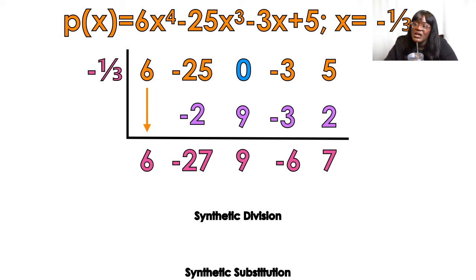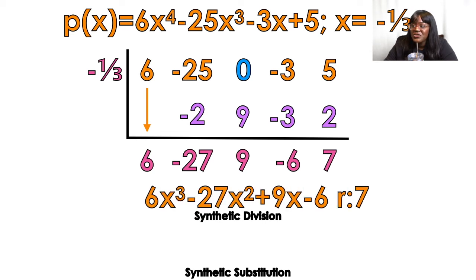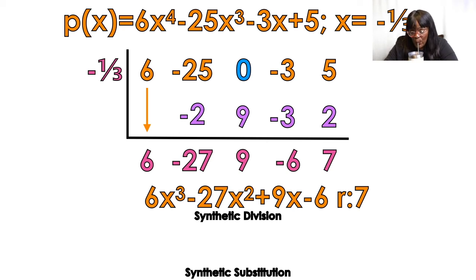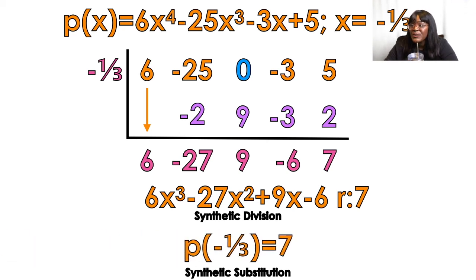My original problem is a fourth degree, so my answer is going to be a third degree. The answer is 6x cubed minus 27x squared plus 9x minus 6, remainder 7. If you are doing synthetic substitution, P of negative one-third equals 7. When I plug in negative one-third into the problem, I get out a 7. The ordered pair negative one-third comma 7 is on the graph.